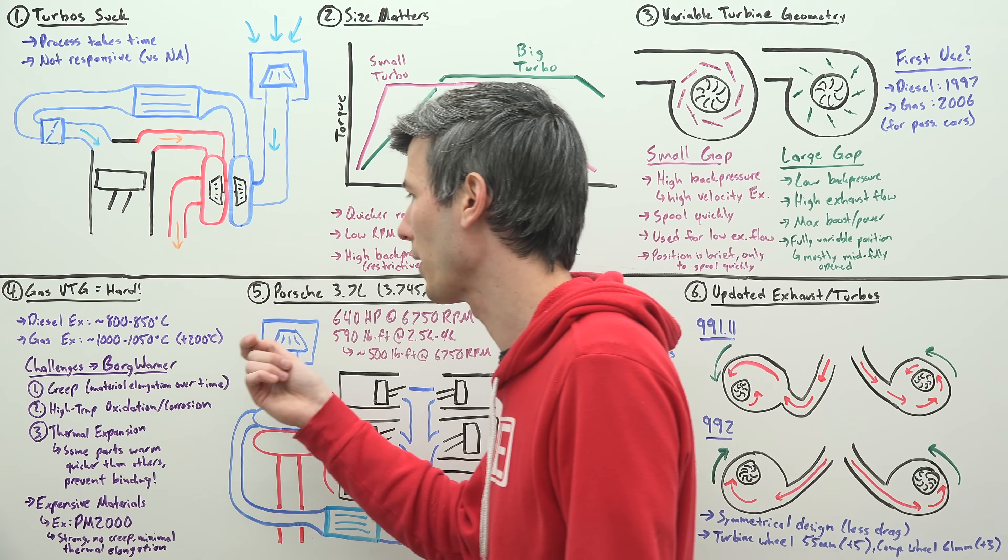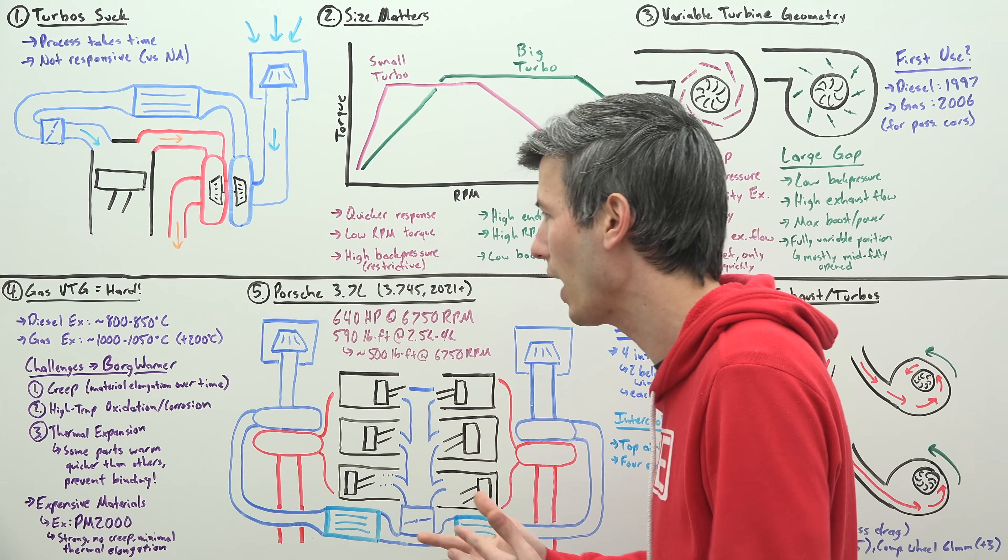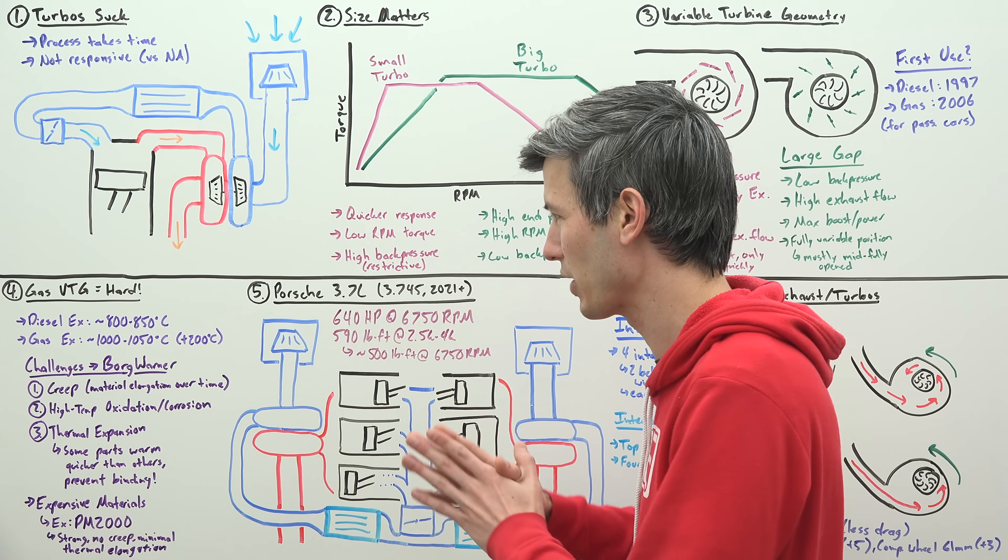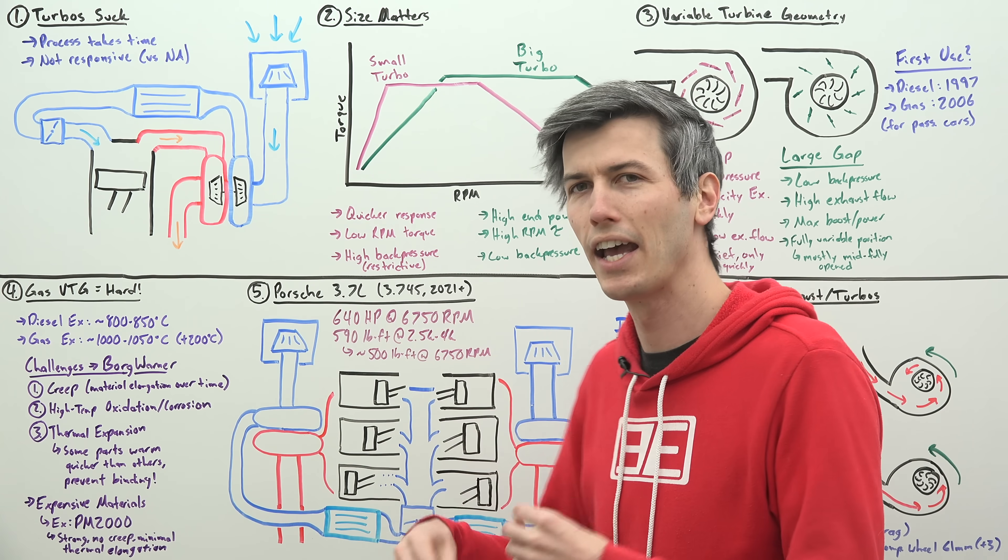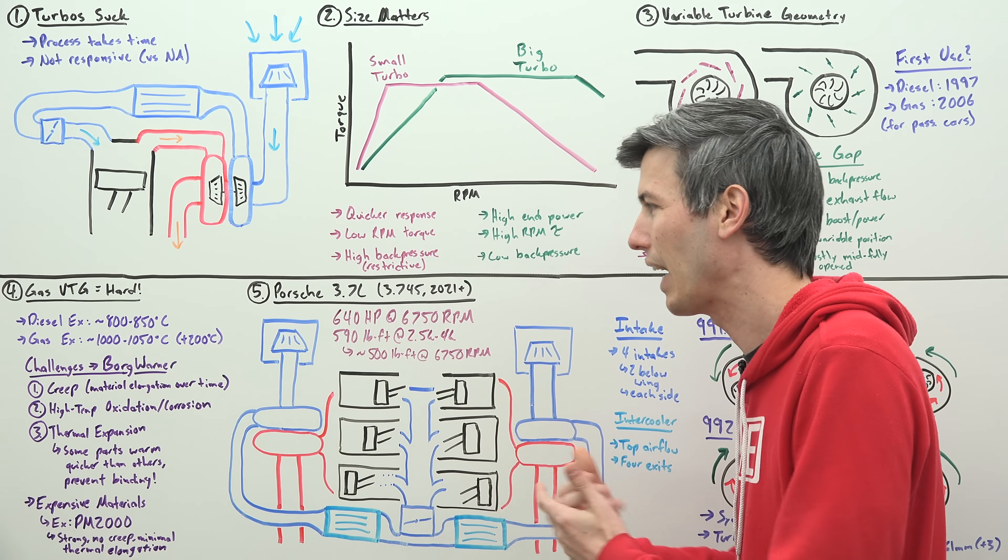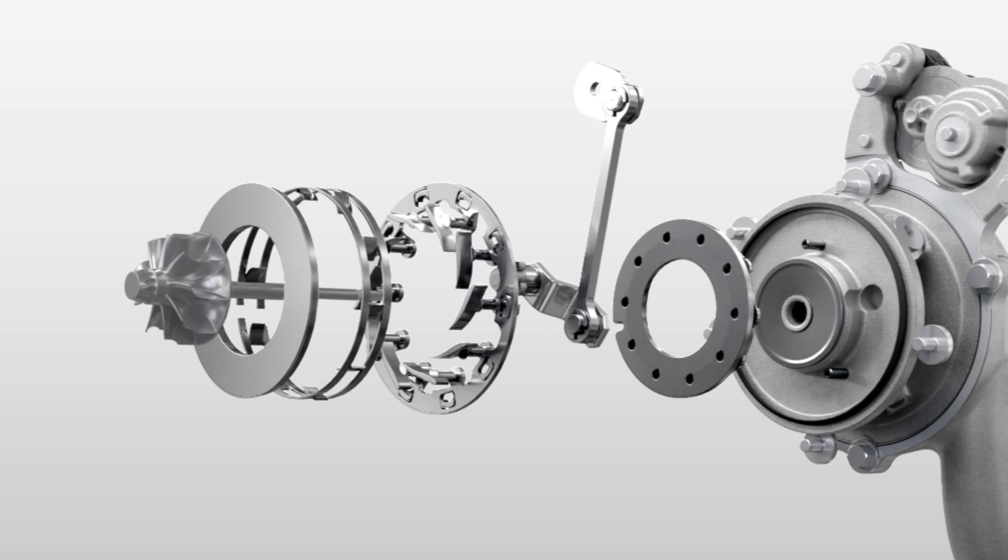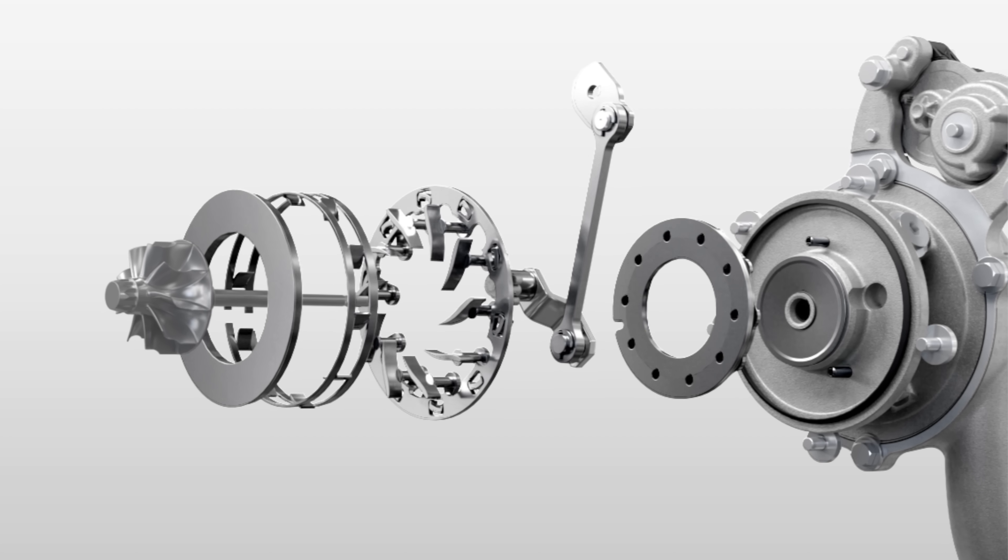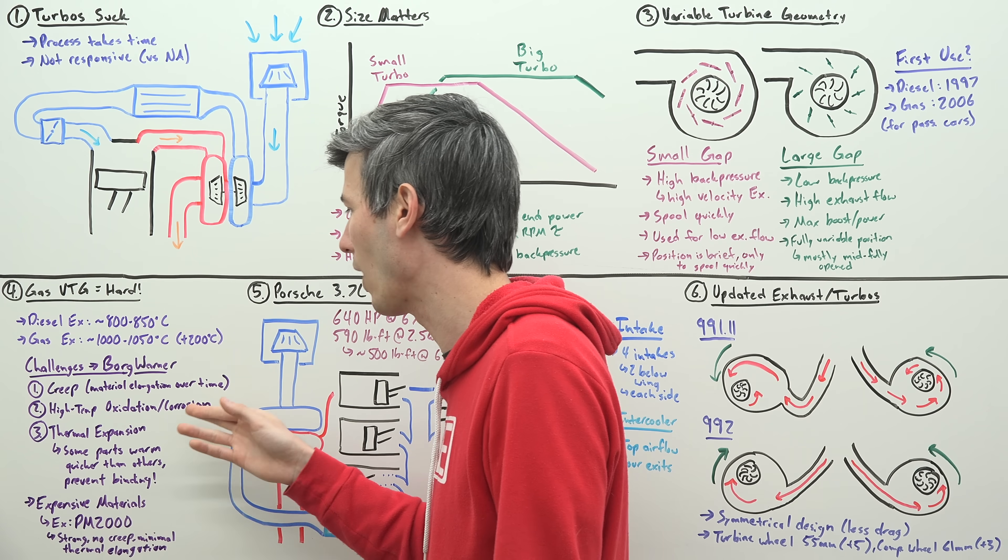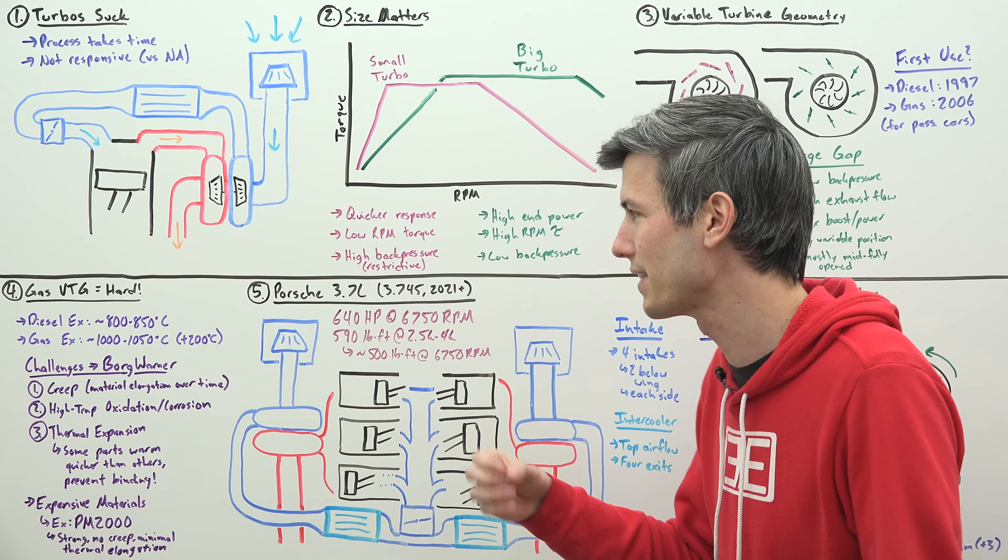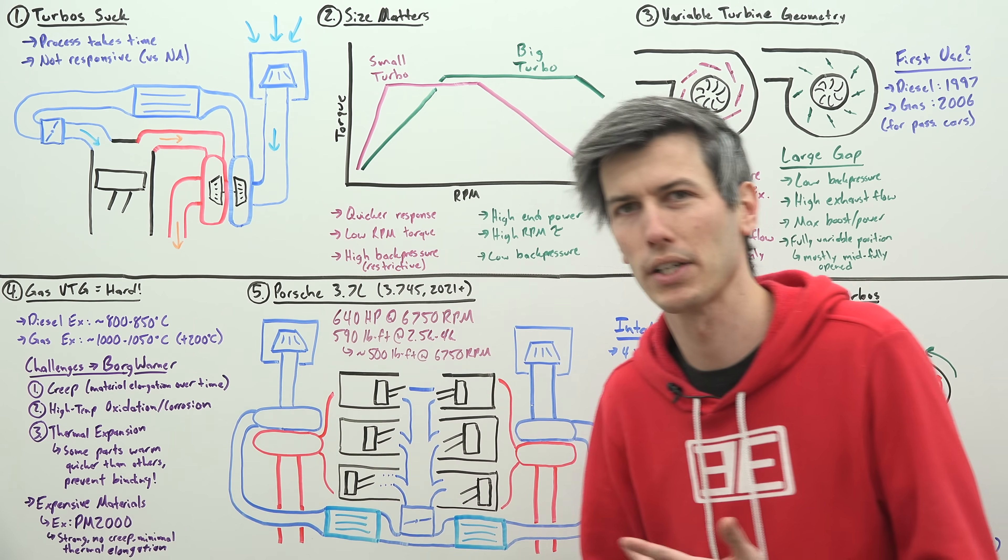First of all, you have to deal with creep, which is material elongation over time. This isn't related to thermal expansion, it's a separate thing. It's basically the permanent elongation of certain parts and it's more prominent when you get into really high temperatures. That's an issue if you have really small, fine controlled parts that can never bind. You also run into oxidation and corrosion as an issue when you start to get into really high temperatures.